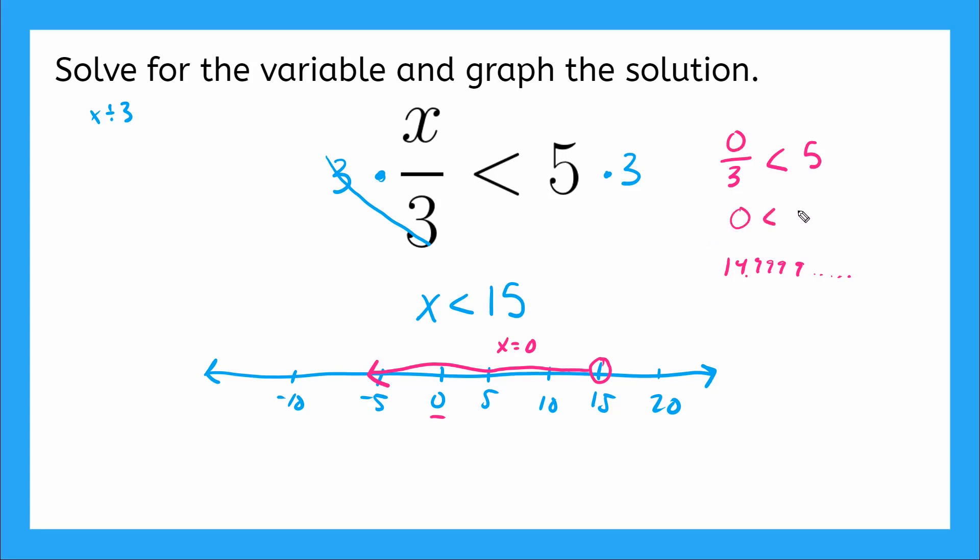What's 0 divided by 3? 0. Is 0 less than 5? Is that true? It sure is. So we can be certain that our answer is correct.